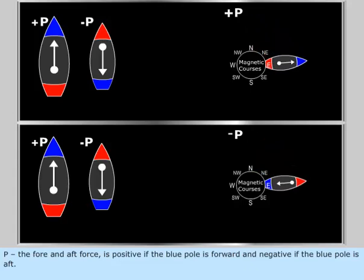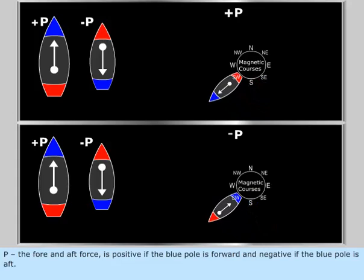P, the fore and aft force, is positive if the blue pole is forward and negative if the blue pole is aft.